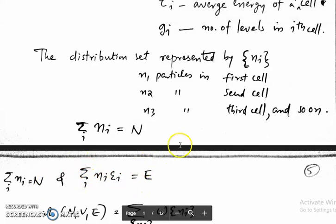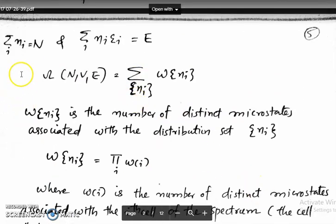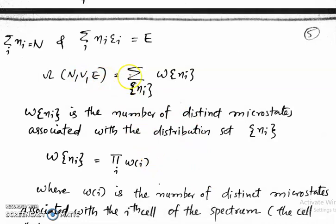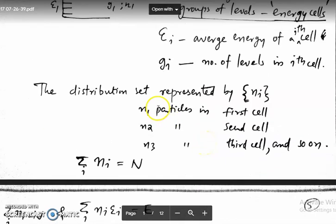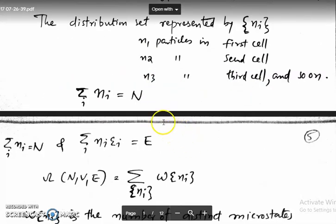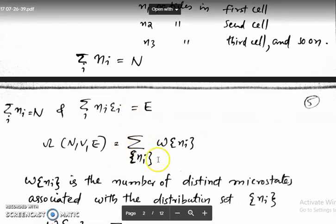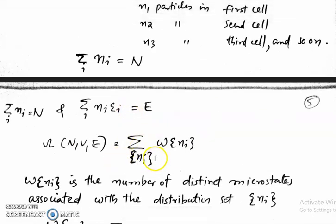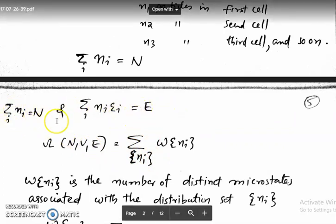Omega(N, V, E), the total number of microstates of the system, is a summation over the different distribution sets satisfying the constraint conditions. A distribution set simply specifies how many particles are there in each cell of the system.